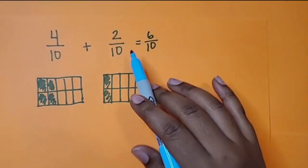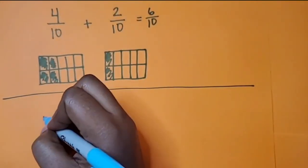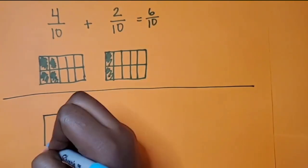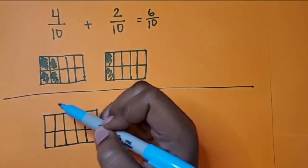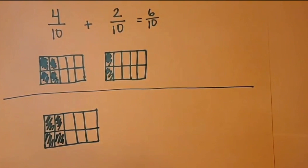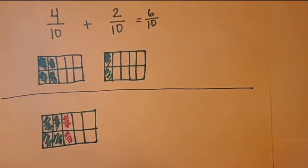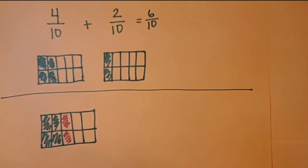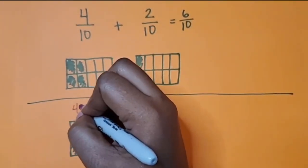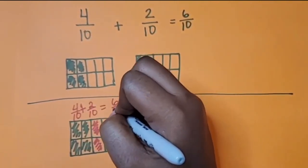You can also represent this equation using one model with different colors. So if we took our 4 tenths and represented it here in our whole and shaded in 4, there is 4 tenths represented there. We then add in our 2 tenths. That's another way to add our two fractions together using the same model. So 4 tenths plus 2 tenths equals 6 tenths.